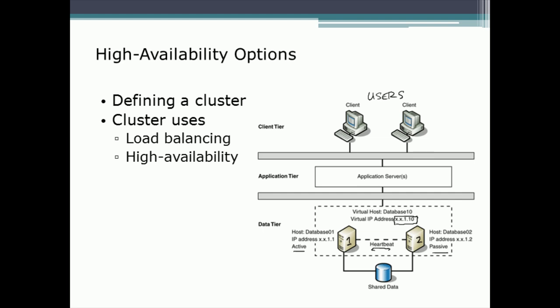Maybe it's an email server — let's stick with Exchange. The user wants to send their email and they send it to the Exchange server, which gets an address resolved by DNS. They send it to that virtual address, which is responded to by the active member of the cluster. It handles the information, takes care of sending or retrieving email, and gives the appropriate responses back. The next client also sends to that same virtual address, goes to that same active server, which responds as well.